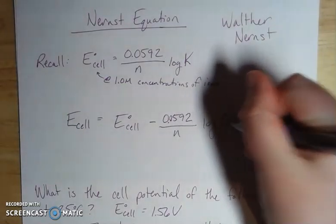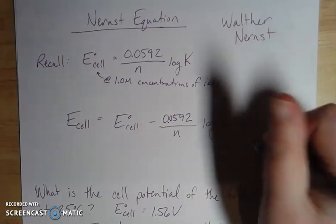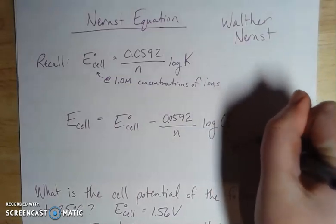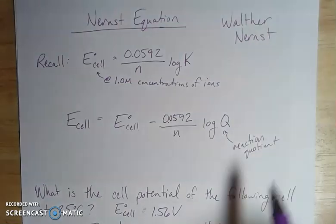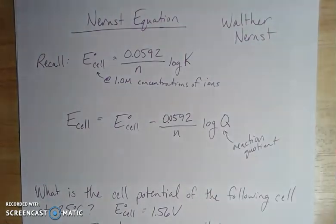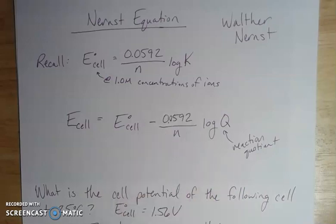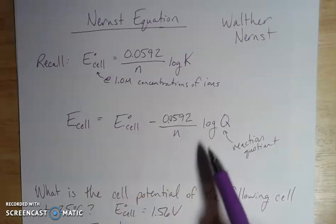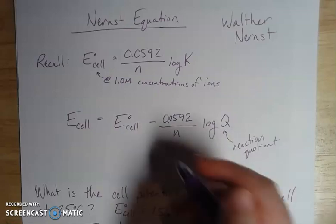Here's how it looks: E cell is equal to the standard potential minus 0.0592 over N log Q. Instead of a K value, we're going to have a reaction quotient Q, which we've seen before when we've looked at non-equilibrium concentrations of ions. This is still going to be at 25 degrees Celsius.